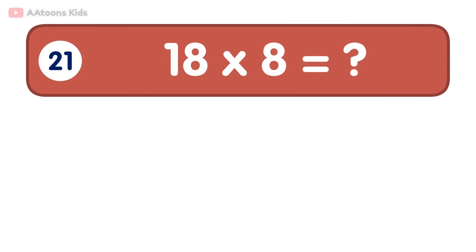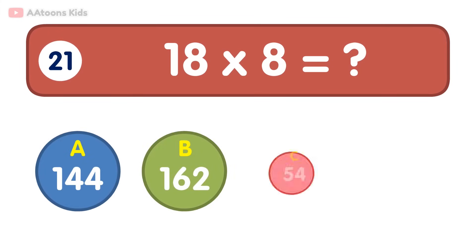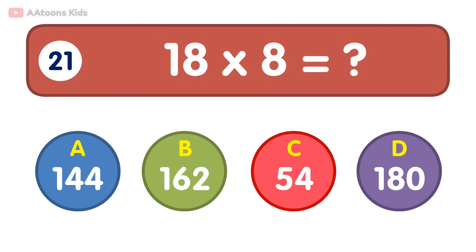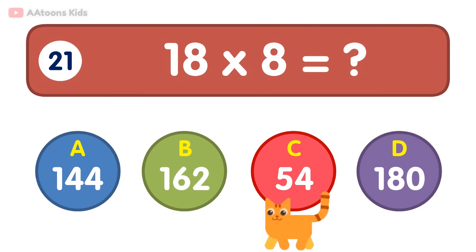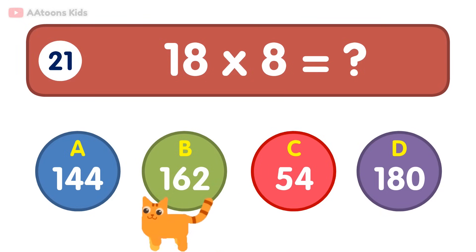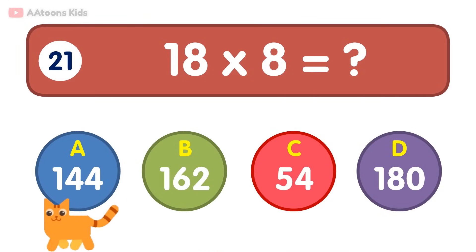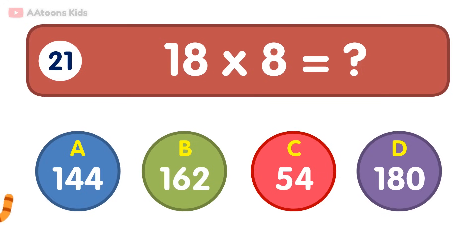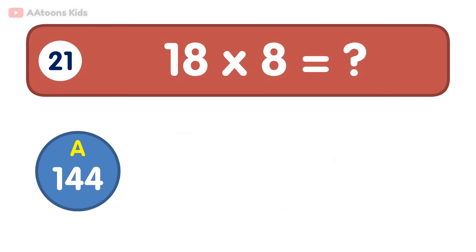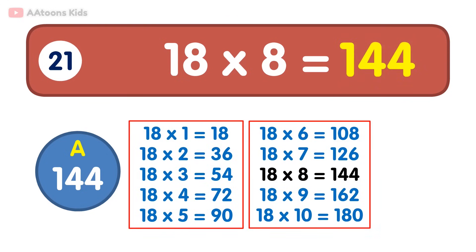18 times 8 is equal to 144. 18 times 8 is 144.